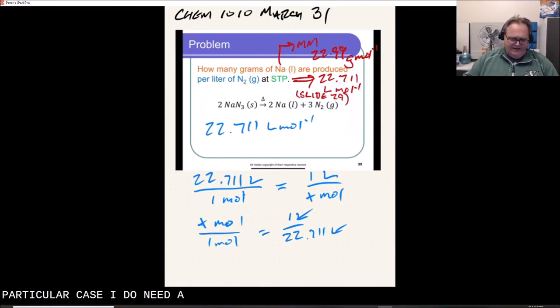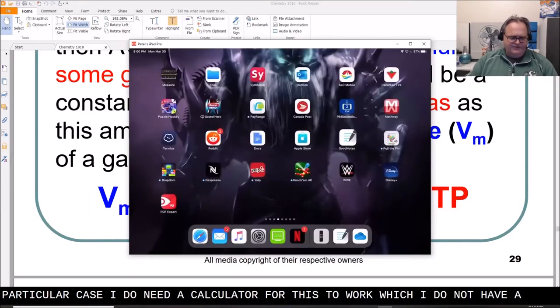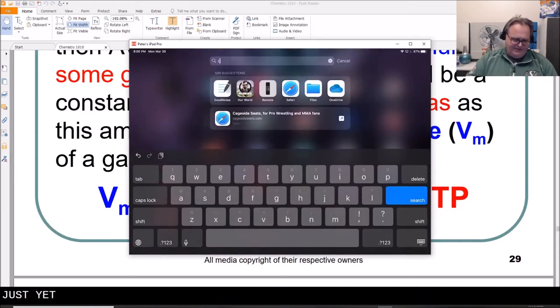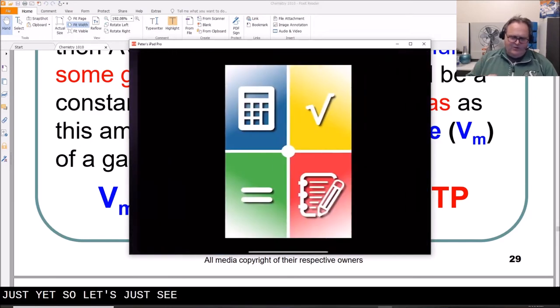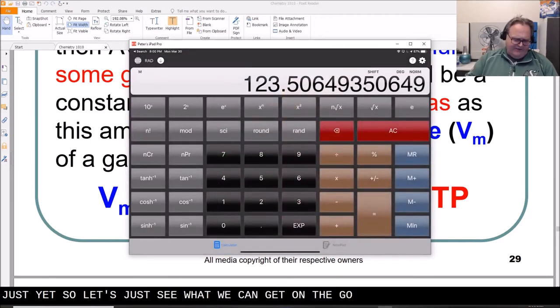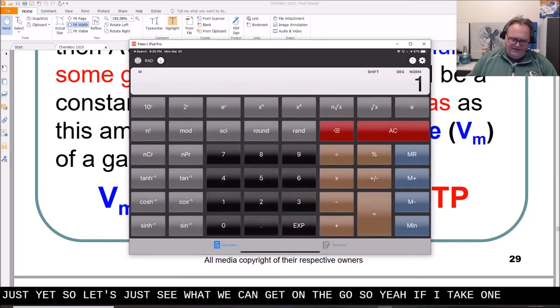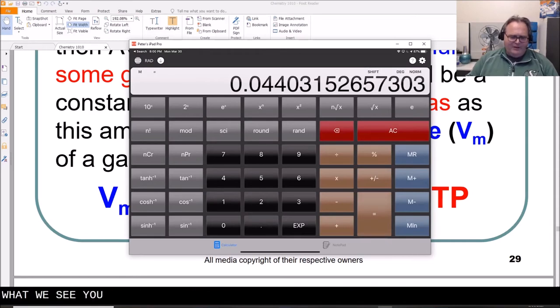I do need a calculator for this to work, which I do not have open just yet. So let's just see what we can get on the go. So yeah, if I take 1 divided by 22.711, what we see is that we have 0.0440 moles.